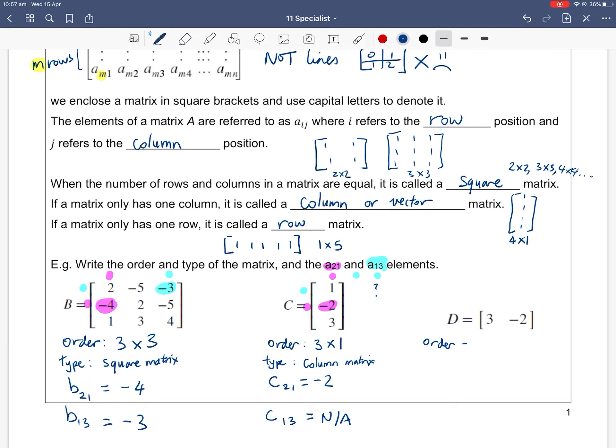D, let's finish that off. The order—how many rows by columns? It's 1 row by 2 columns, so it's a 1 by 2 matrix. Type? Well, it's only 1 row across, so it's called a row matrix. Element 2, 1—row 2, column 1. There is no row 2, so it's not applicable. Element row 1, column 3. Well, again, we can't. There's no answer because there is no column 3. So we just write N/A.